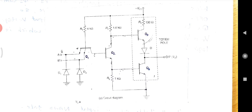Q4 gets base drive from Q2. So when Q4 is on, Q2 has to be on. Therefore, its collector to emitter voltage is Vce equal to 0.3V.